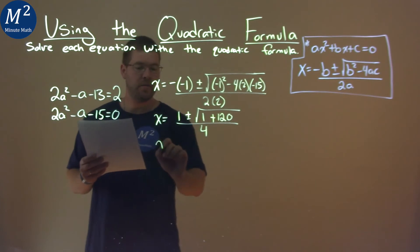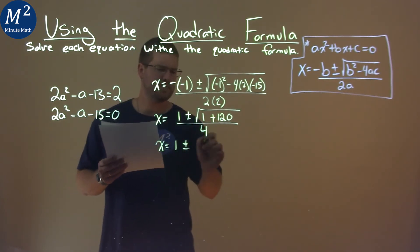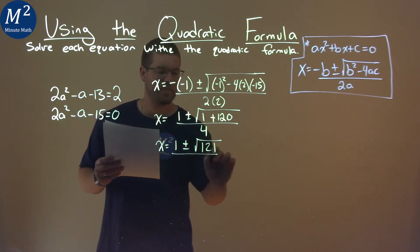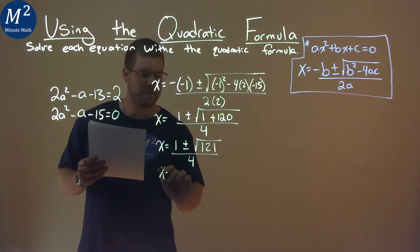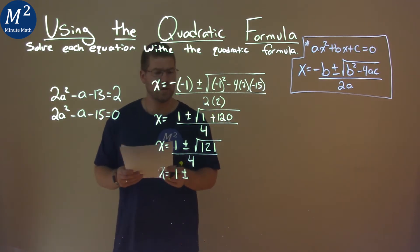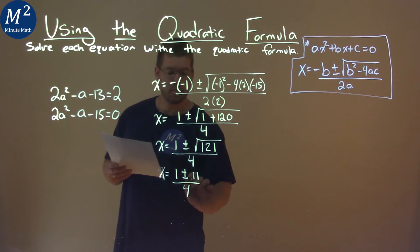From there, we have x equals 1 plus or minus—1 plus 120 is 121—over 4. So x equals 1 plus or minus the square root of 121, which is 11, over 4.